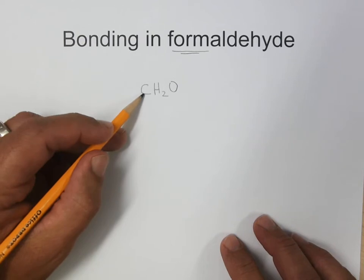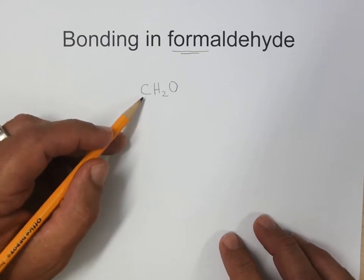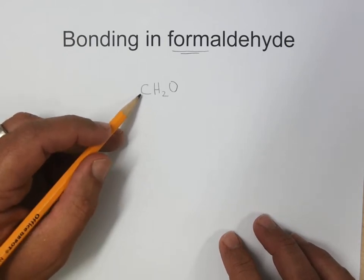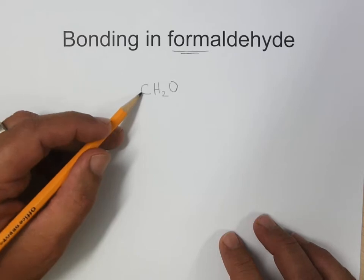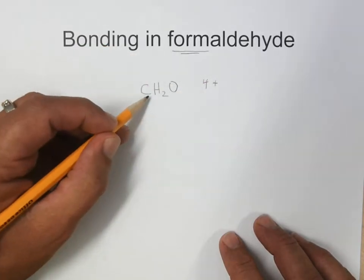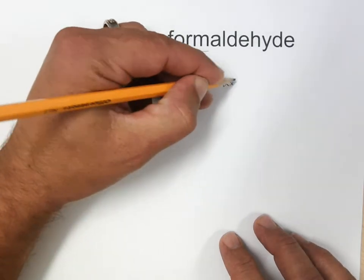If you go to do the Lewis dot structure for this, which is a great starting point any time you want to understand the bonding in a molecule, if you could draw a Lewis dot structure, you're off to a good start. So we need four electrons for the carbon, four valence electrons for the carbon, two times one for the hydrogen,